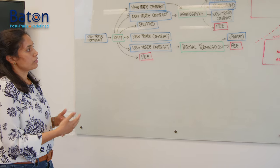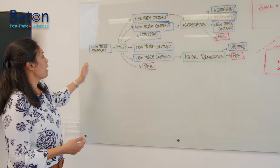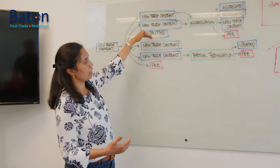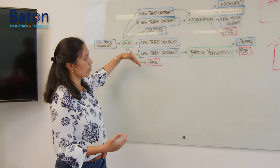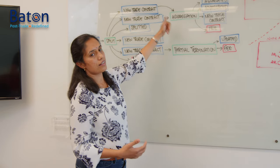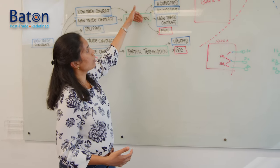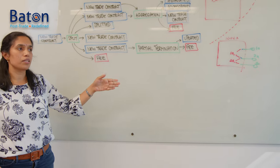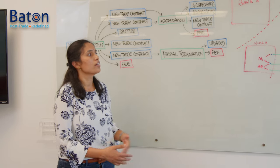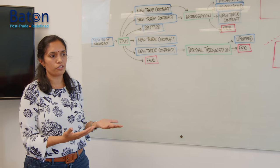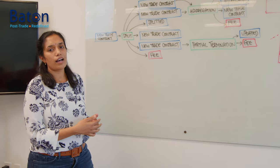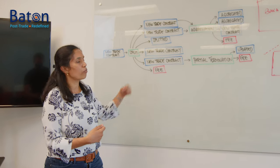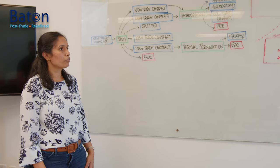A domain model talks about the life cycle of a contract — what steps you can incorporate, which steps you can customize, and which steps are visible to the external world or a third party. Here's an example: a new trade contract comes in, and based on the data, we decide to split it into multiple contracts. You get a notification that the contract has been split. These contracts can then be aggregated through an aggregation process, producing a new contract. Some contracts can be terminated through a termination process and the contract is updated. These are the different stages in a trade's life cycle.